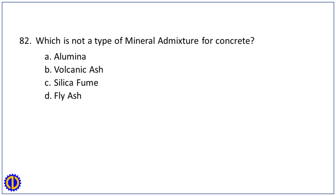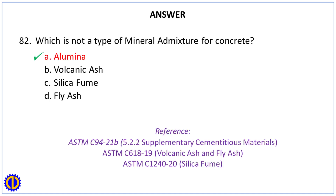Question 82. Which is NOT a type of mineral admixture for concrete? A. Alumina. B. Volcanic ash. C. Silica fume. D. Fly ash. Answer: A. Alumina. Reference: ASTM C94-21B 5.2.2 Supplementary cementitious materials; ASTM C618-19 Volcanic ash and fly ash; ASTM C1240-20 Silica fume.